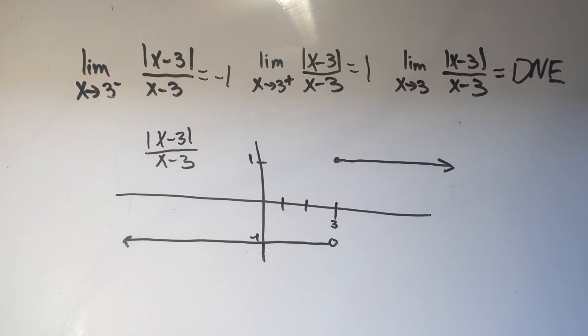So that's all you need to know when you're doing limits with absolute value. All you have to do is replace the absolute value sign with either parentheses, or negative parentheses, depending on which side you're coming from. Thanks for watching.